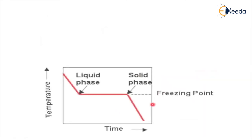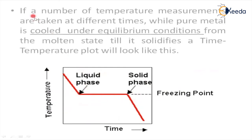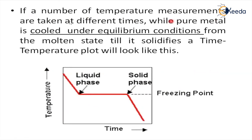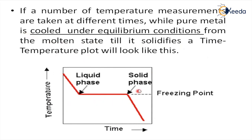The horizontal line in the cooling curve is formed when a pure metal is cooled under equilibrium conditions. If temperature measurements are taken at different times while pure metal cools under equilibrium conditions, the time-temperature plot will show a horizontal line at the solidification temperature. This graph is called a time-temperature plot.